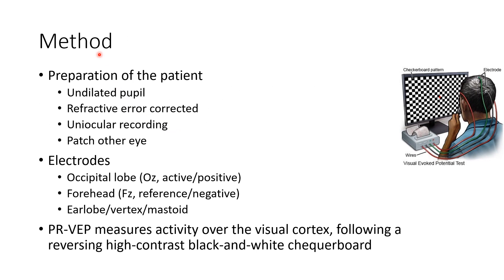Now let us discuss the method of VEP. Regarding preparation of the patient, the pupil should be undilated and the refractive error should be corrected. VEP is a uniocular recording, so we have to patch the other eye. The electrodes placed in VEP are the occipital lobe electrode, forehead electrode, and ear lobe or vertex electrode.